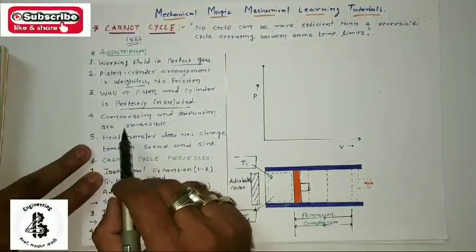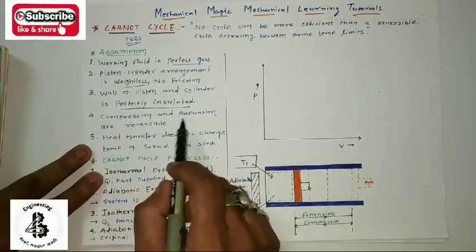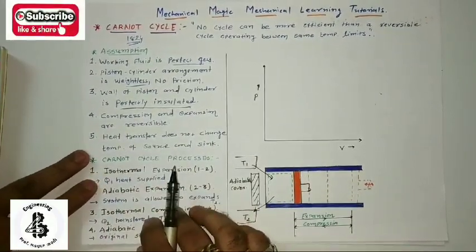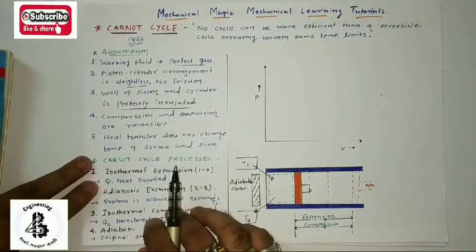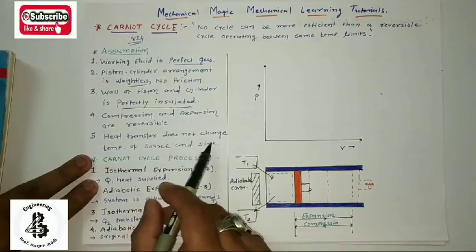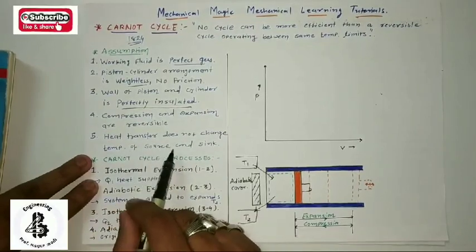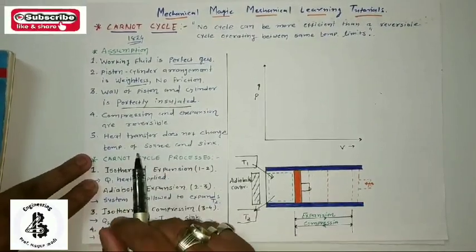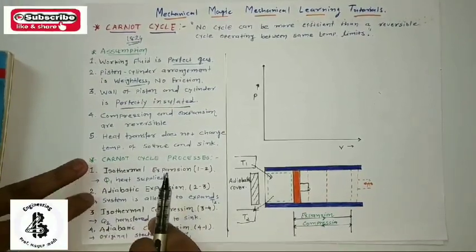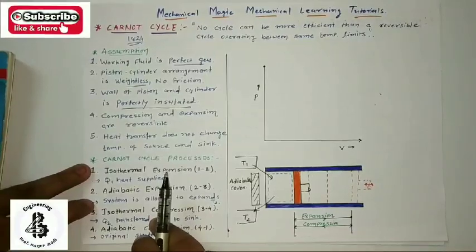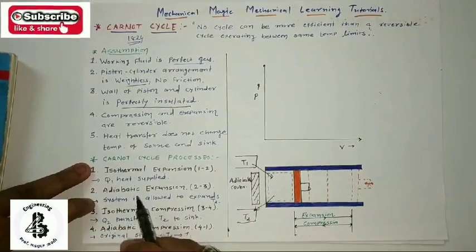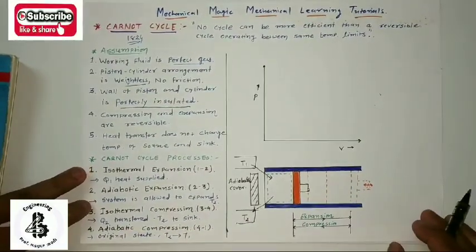Fourth, compression and expansion are reversible, which practically is also not possible. Last, heat transfer does not change the temperature of the source and sink — meaning there is no loss of energy during the process, which is once again practically not possible. Those are all the assumptions taken by Carnot in making his theories.